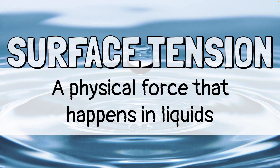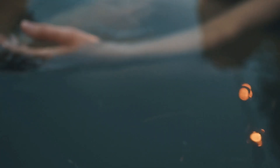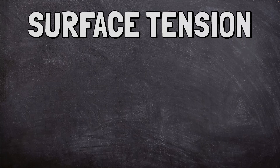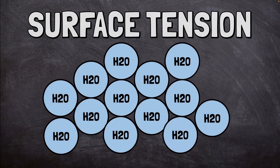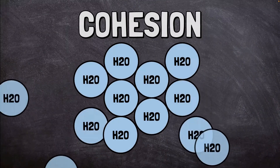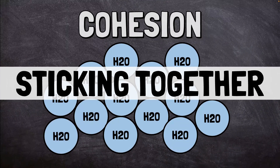Surface tension is a physical force that happens in liquids. It causes the surface of the liquid to seem stronger than it should be. Surface tension happens because the molecules that make up a liquid are attracted to one another like magnets. This attraction is called cohesion, which means sticking together.